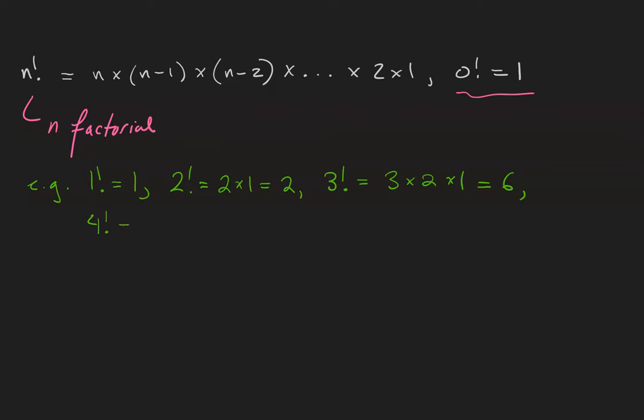4 factorial is 4 times 3 times 2 times 1, which is 24. 5 factorial is 5 times 4 times 3 times 2 times 1, which is 120.